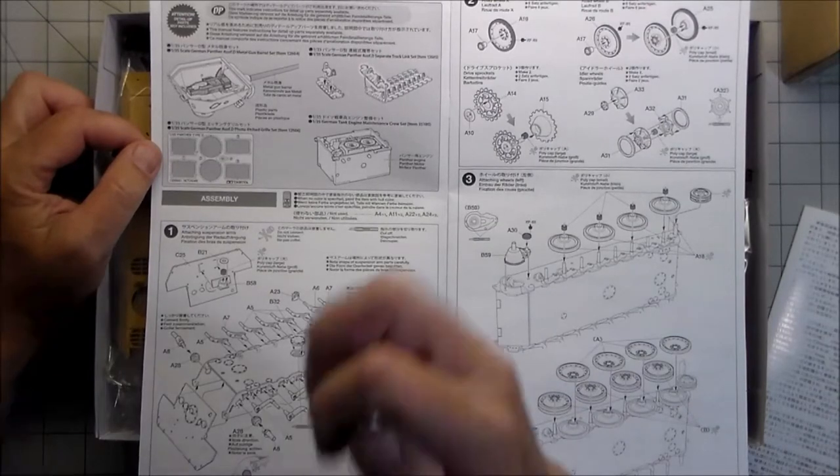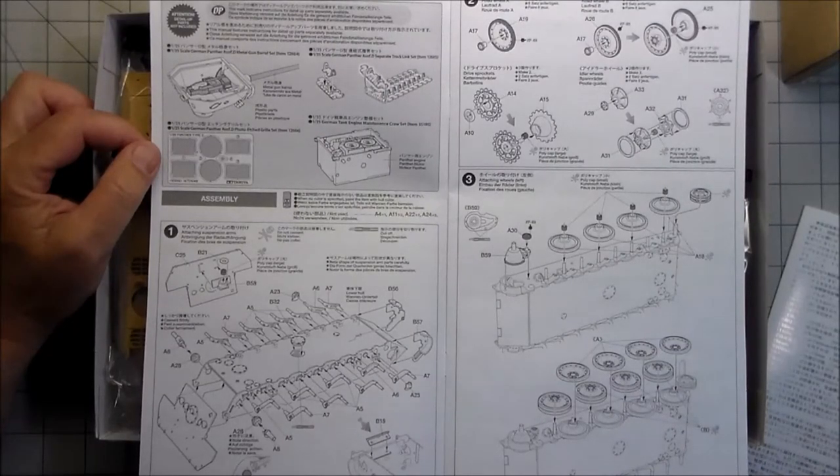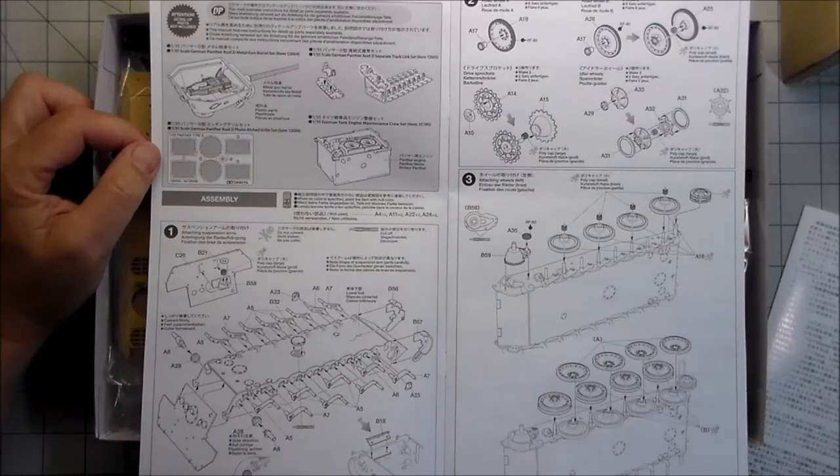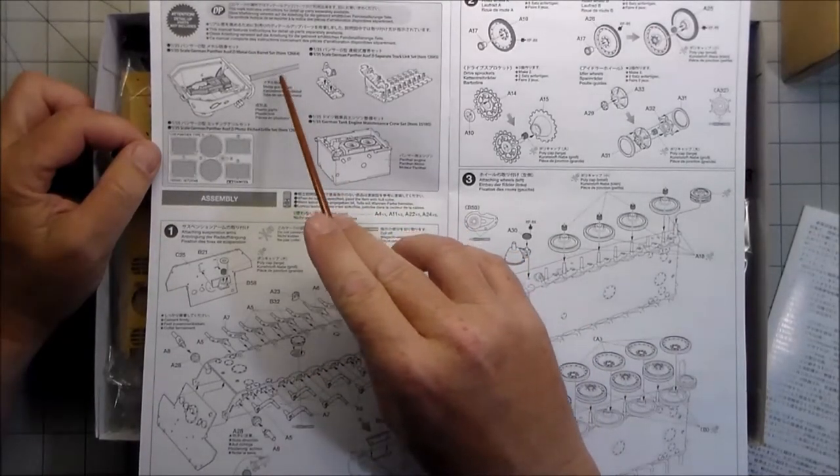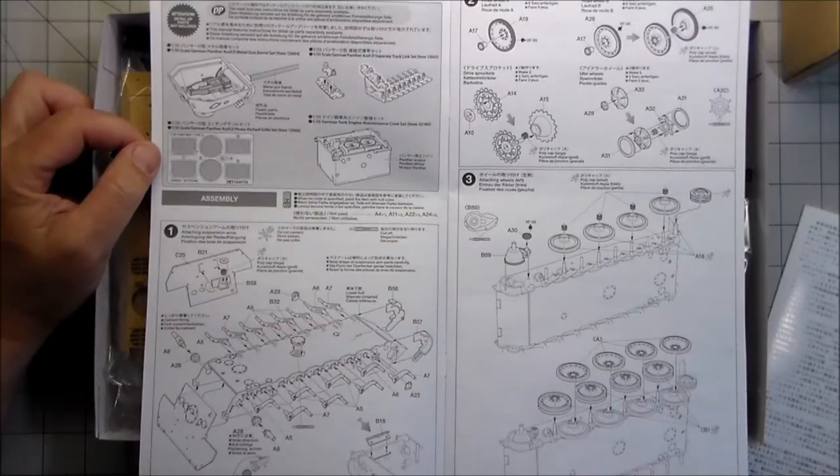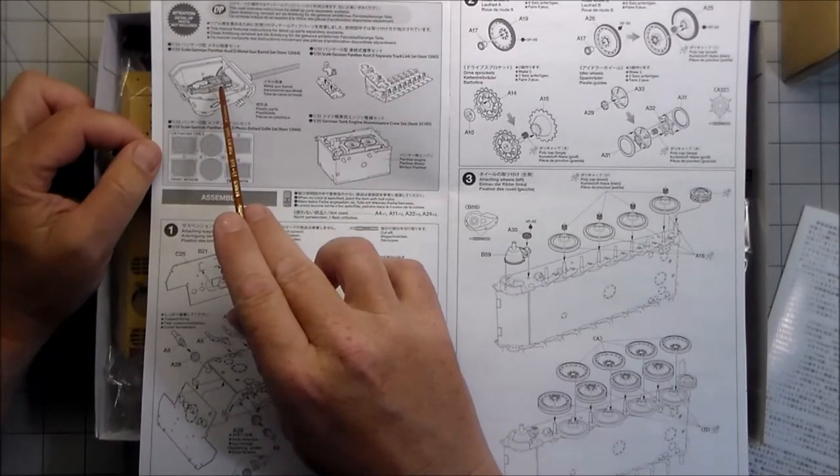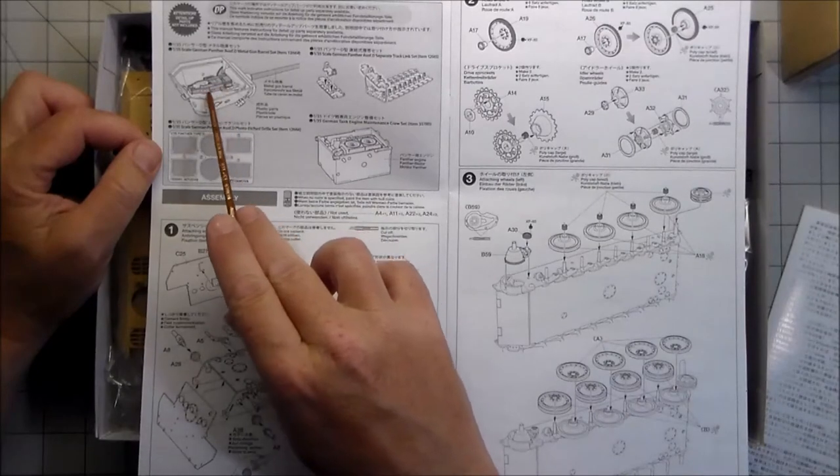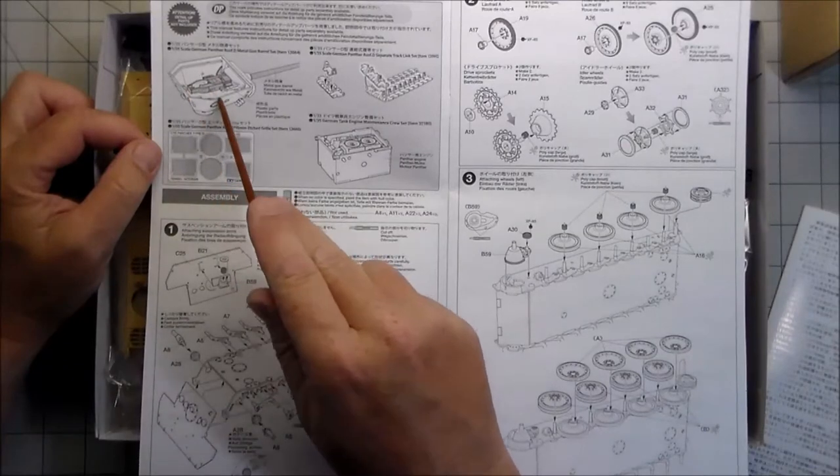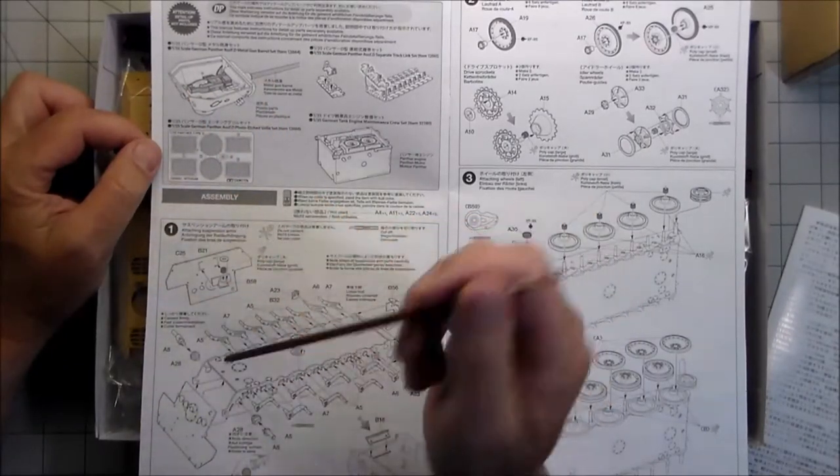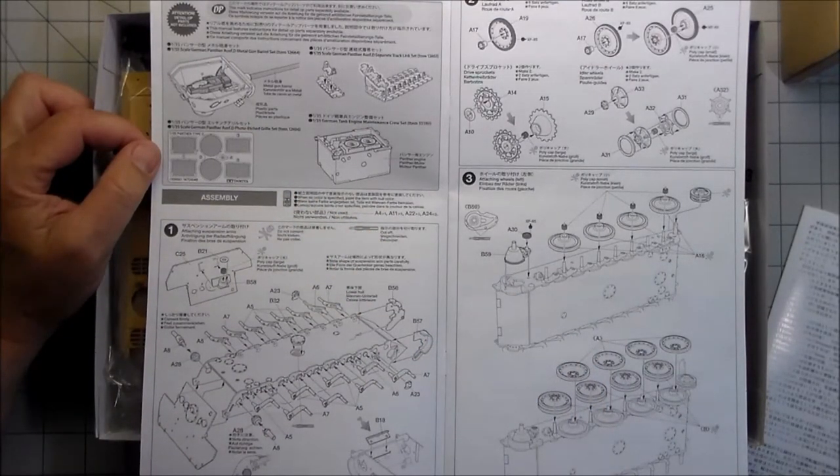The one thing I think they should package with the kit is the grill set, because all Panthers as far as I know need the grills. The metal barrel - I've used metal barrels and plastic barrels, and the new tool slide-molded barrels are pretty good. The detailed breech seems kind of pointless to me in that you're getting this really nice detailed breech assembly and you can't even see it.